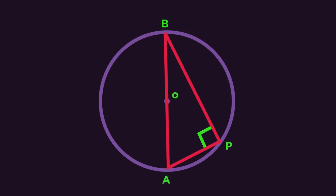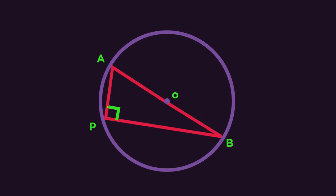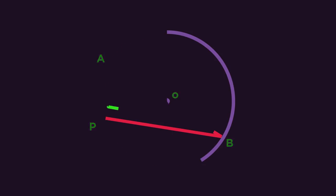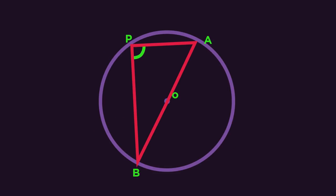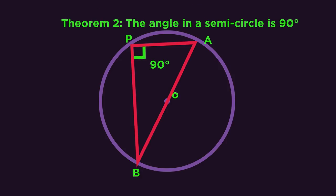So here's theorem two. We have a semicircle. What do you notice about the angle? The angle in a semicircle is always 90 degrees and that's theorem two.